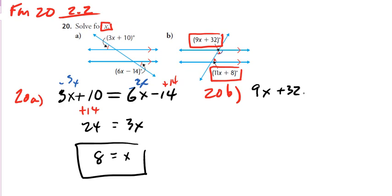9X plus 32, this angle, plus this angle, 11X plus 8, did I just write an H there? 11X plus 8 should equal 180. So we know that to be true, and now we can set up this equation.